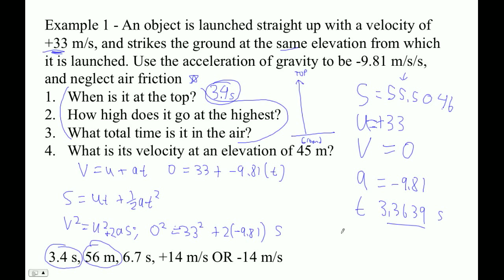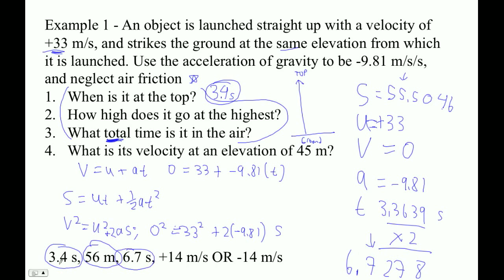And then the total time in the air — what total time is it in the air? That's going to be the time to the top times 2, because half the time up, half the time down. If I multiply 3.3639 by 2, I get 6.7278. With two sig figs I would say 6.7 seconds. It looks a little crazy with sig figs — it looks like it should be 6.8, but it isn't. And that's why sig figs aren't the best.